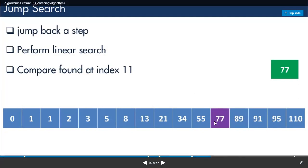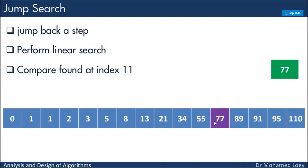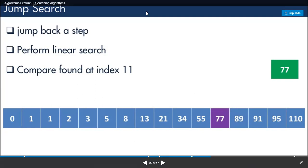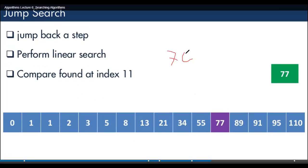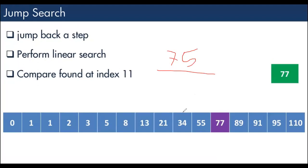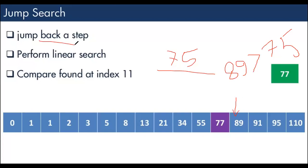There are two questions here. First, if the value doesn't match — say I'm looking for 75, which is not in the array — I reach 89 and see it's larger than 75, so I start jumping back. The question is: how long do I keep jumping back? If I jump one step I won't get 75, another step still no 75 — so how do we control how many steps to jump back?